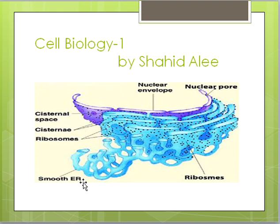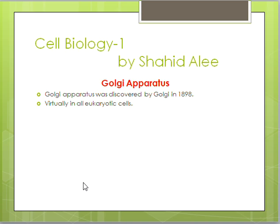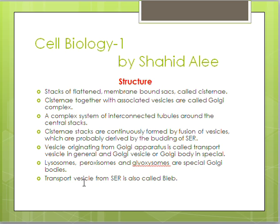Now, the Golgi apparatus was discovered in 1898 by Camillo Golgi. Its structure consists of flattened membrane-bound sacs called cisternae, along with Golgi vesicles, collectively called the Golgi complex. Cisternae stacks are continuously formed, and Golgi vesicles bud off from the cisternae — a process also called blebbing.